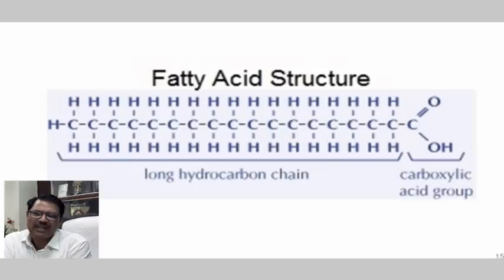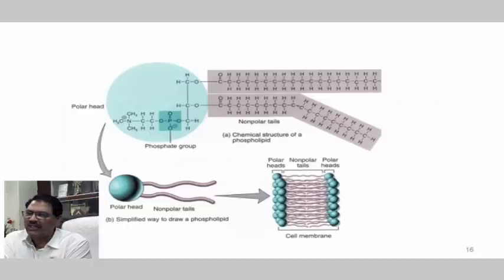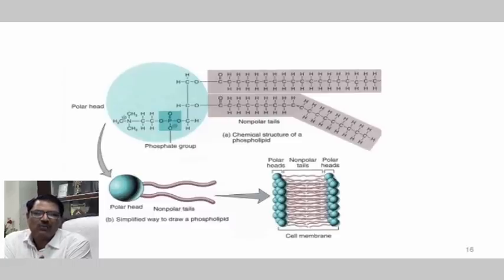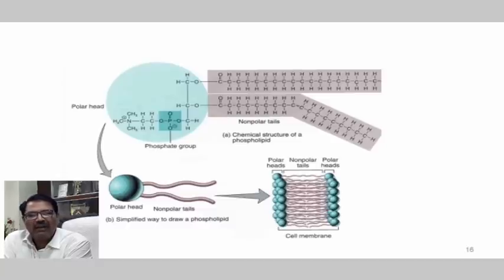Fatty acids are long hydrocarbon chains which are hydrophilic in nature, and a carboxylic group is also attached. This is the fatty acid structure. It contains a phosphate group, and polar heads and nonpolar heads are arranged. The hydrophilic nature allows it to form a cell membrane which protects the RNA in the virus. Glycerol is there, and fatty acids combined with glycerol — glycerol having three hydroxy groups — convert to triglycerol.